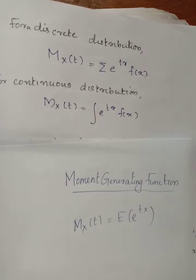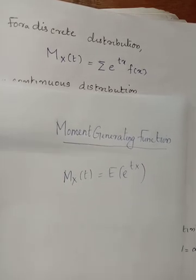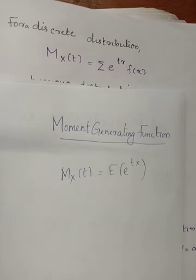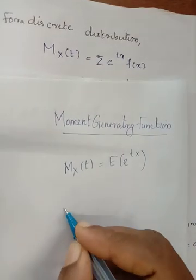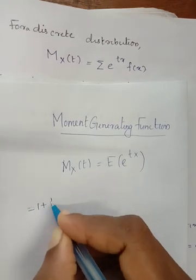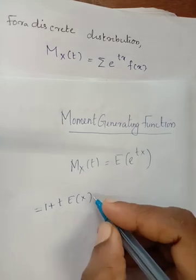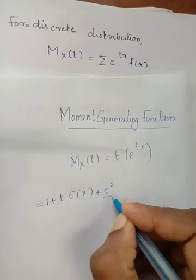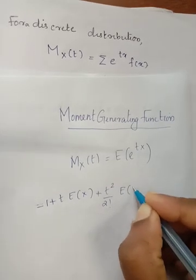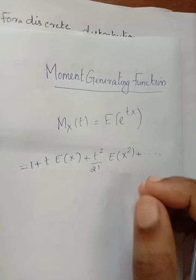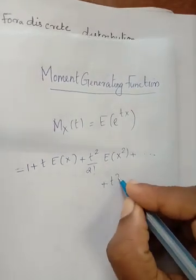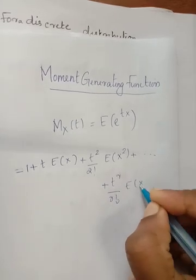If we calculate the moment generating function, it will be used to calculate the moments — we have seen the central and raw moments. We expand the expectation of e raised to tx as: 1 plus t times E(x) plus t squared over 2 factorial times E(x squared) plus etc., up to t raised to r over r factorial times E(x raised to r), plus etc.